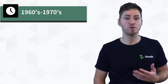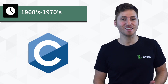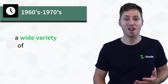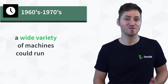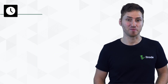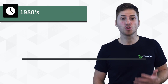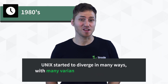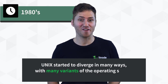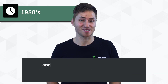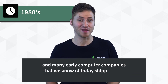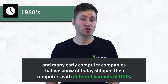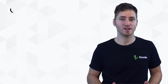Unix quickly grew in popularity around Bell Labs and eventually schools and universities. Within a decade, it was ported to the C language, which made it extremely portable — meaning a wide variety of machines could run the operating system. Then during the 80s, Unix started to diverge in many ways, with many variants of the operating system, and many early computing companies that we know of today shipped their computers with different variants of Unix.